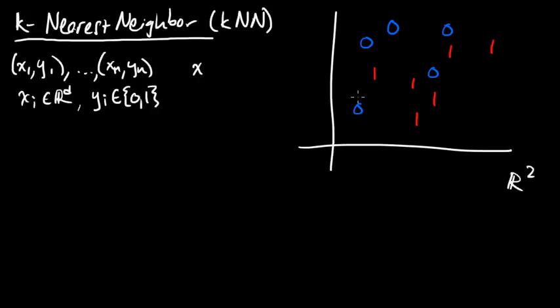We've got some 0s, maybe something like that. Now, each of these is a point in R2, so each of these points is an x and the label is the corresponding y for that point. Now, we're given a new point. Let's say, maybe this point here.